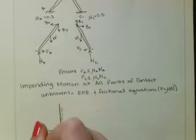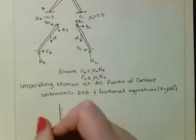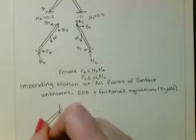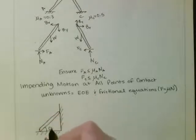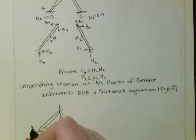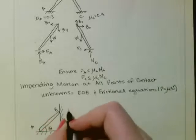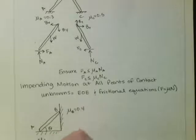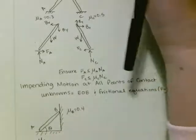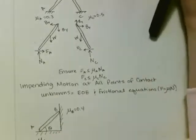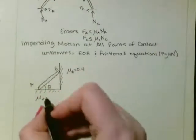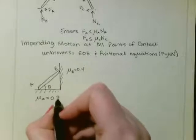So at a surface like this, let's say I had a ladder sitting like this at some angle theta. Point A. Point B. I know that mu B is equal to 0.4 and mu A is equal to 0.3.